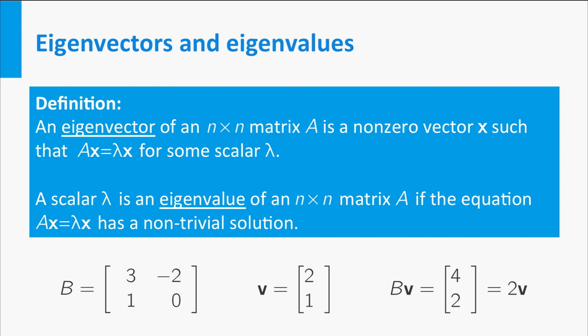The scalar lambda is an eigenvalue of an n by n matrix A if the equation A times x equals lambda times x has a non-trivial solution. But this means that the scalar 2 is an eigenvalue of the matrix B from the example, because you know a non-trivial solution, namely V.